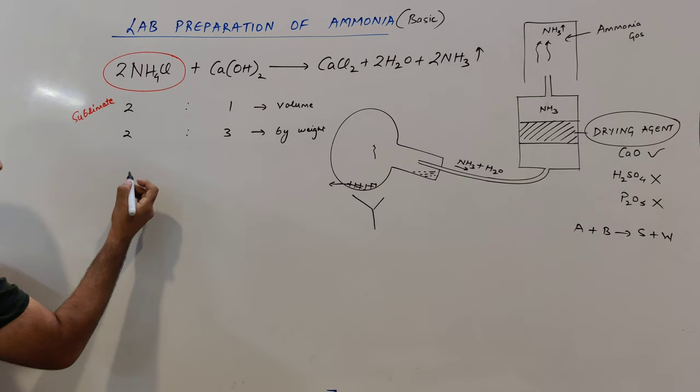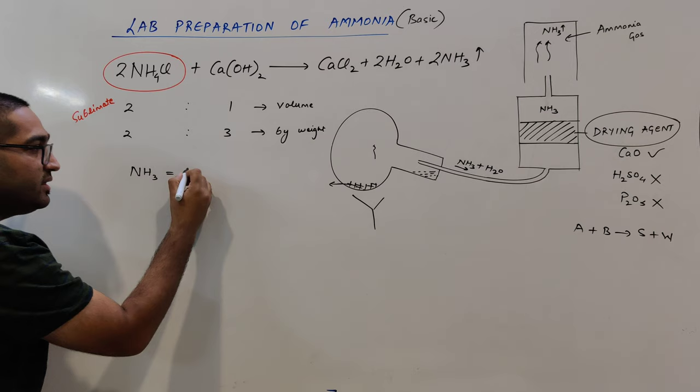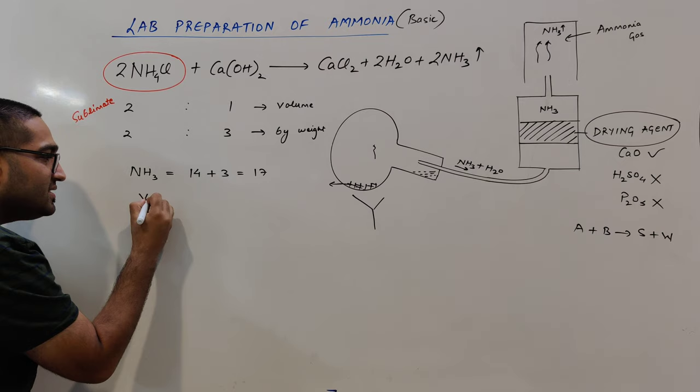Ammonia gas is a lighter gas. NH3 has a molecular mass of 14 (nitrogen) plus 3 (hydrogen) = 17. The vapor density of ammonia is 17 divided by 2, which equals 8.5.